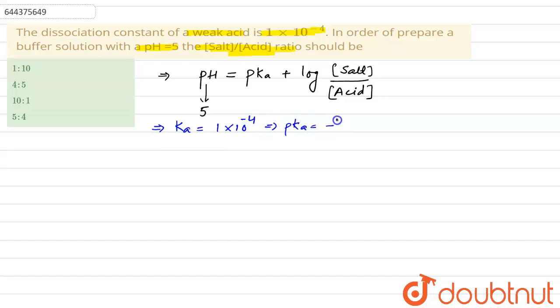pKa would be equal to minus log of Ka, which will be equal to minus log of 1 into 10 to power minus 4, and pKa will be equal to 4.